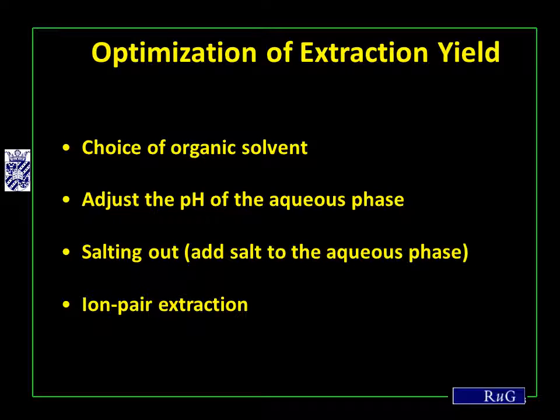Finally, if drug molecules carry a permanent charge such as sulfonic acids or quaternary ammonium salts, adjusting pH will not help in extracting them into an organic phase. In this case, it is possible to add an ion-pairing reagent which has the opposite charge — for example, a sulfonic acid to a quaternary ammonium salt or the other way around — to increase the hydrophobicity. The ion-pair reagent is oppositely charged and has also a long hydrophobic tail to increase the hydrophobicity of the ion-pair itself.